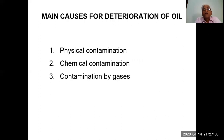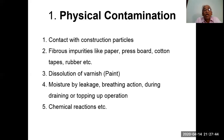The main causes for deterioration of oil are physical contamination, chemical contamination, and contamination by gases. Physical contamination includes contact with construction particles like the transformer body, fibrous impurities such as paper, pressboard, cotton tapes, and rubber; dissolution of varnish and paint from inside the transformer tank; moisture by leakage; breathing action during draining or topping-up operations; and chemical reasons.